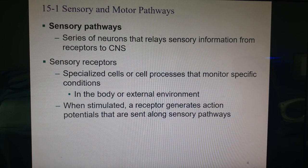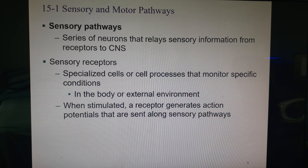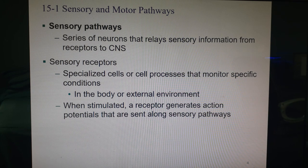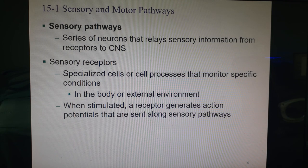So sensory pathways: in order to get information about the body to the brain we have to pass the information through a series of neurons — a minimum of three neurons — that get us from the receptor up to the central nervous system. The receptor is key: a receptor is a special cell, or at least a cell process usually on the dendritic end, that is able to respond to a particular stimulus.